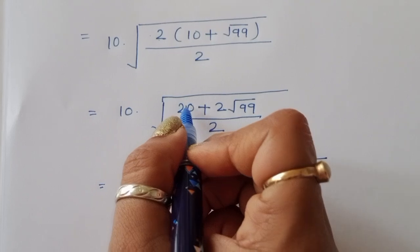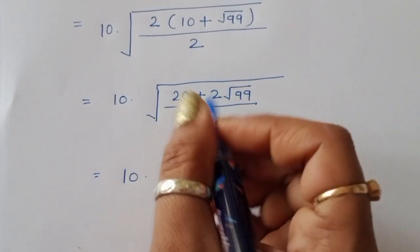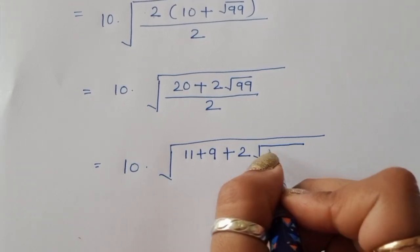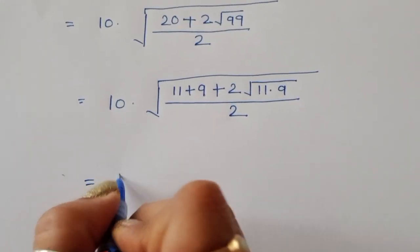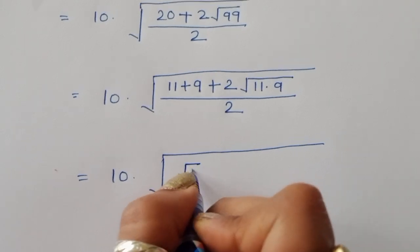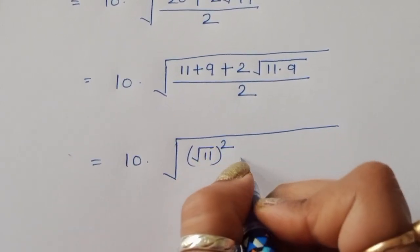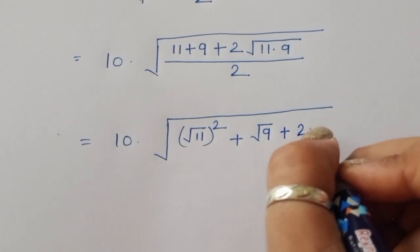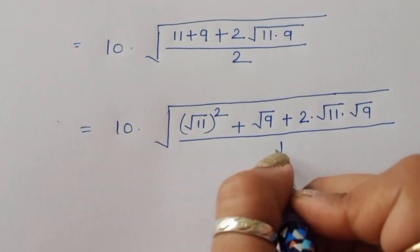Now we convert 20 into 11 plus 9 — since 11 plus 9 equals 20 and 11 times 9 equals 99. So we rewrite as 11 plus 9 plus 2√99. Since √99 equals √(11 times 9), we write 11 plus 9 plus 2√11 times √9, all divided by 2.